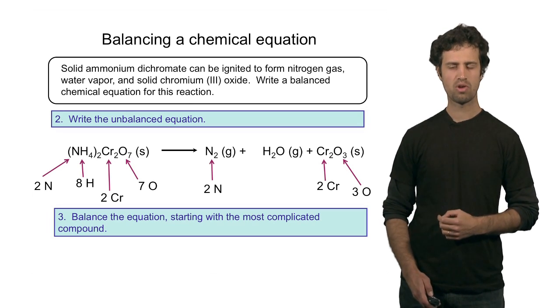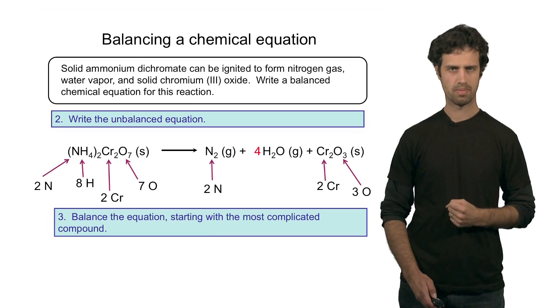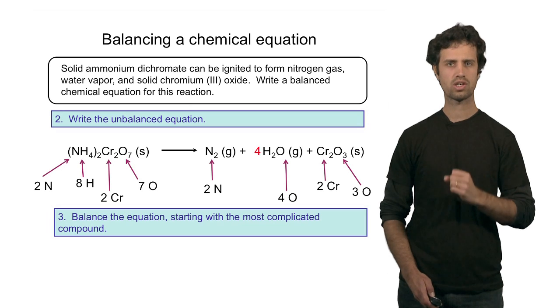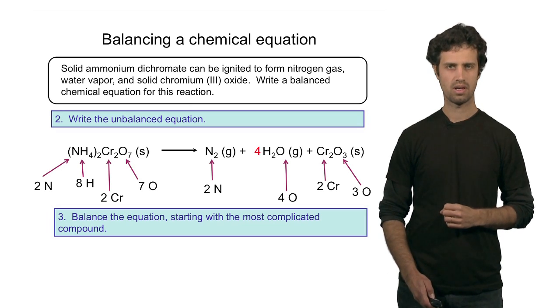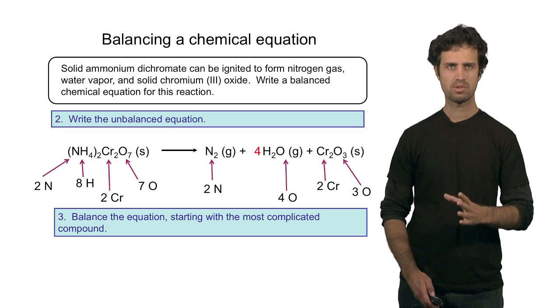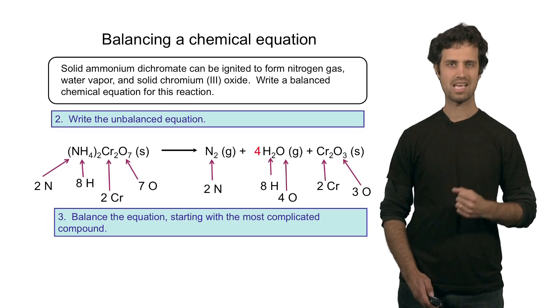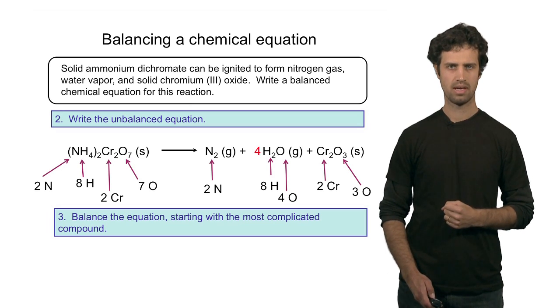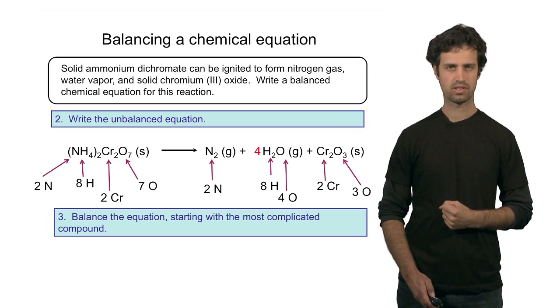I can do that by multiplying the number of water molecules by four. Four water molecules in total. That gives me four oxygen atoms from the water plus the three from the chromium oxide, which adds up to seven. At the same time, I'm introducing four times two, which is eight hydrogen atoms. That means eight hydrogen atoms on the right corresponds to eight hydrogen atoms on the left.